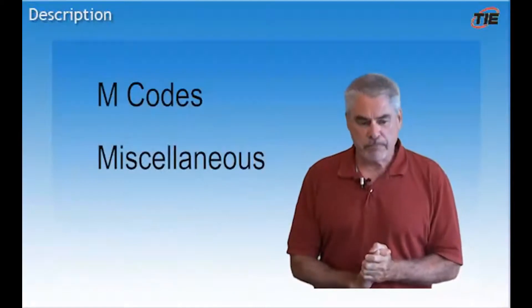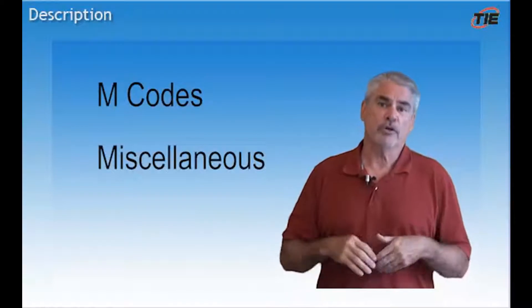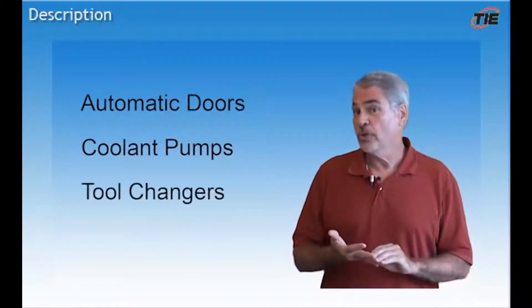M codes, miscellaneous codes. These are used by machine tool builders to control external functions such as automatic doors, coolant pumps, tool changers, and so on.